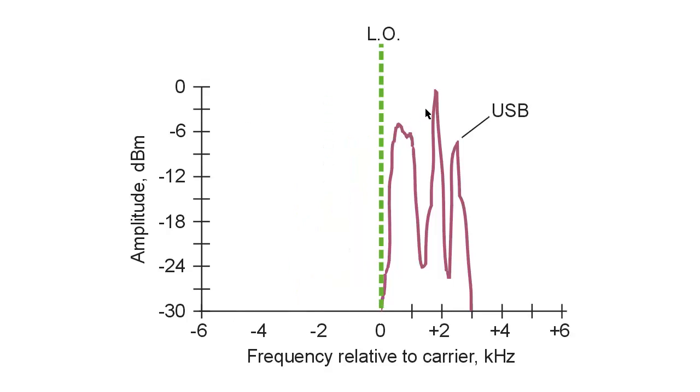We're looking now at what an upper sideband single sideband signal looks like. When it's properly tuned in with the receiver's local oscillator, the frequency of the local oscillator coincides with the frequency of the suppressed carrier in the original signal transmitter. That way, all of these energy components here, ranging from 300 Hz to 3000 Hz, in this case above the carrier or local oscillator frequency, all these little components here beat or heterodyne against the receiver's local oscillator to produce the audio signal that you hear. And it's a faithful reproduction of whatever was being sent at the transmitter.